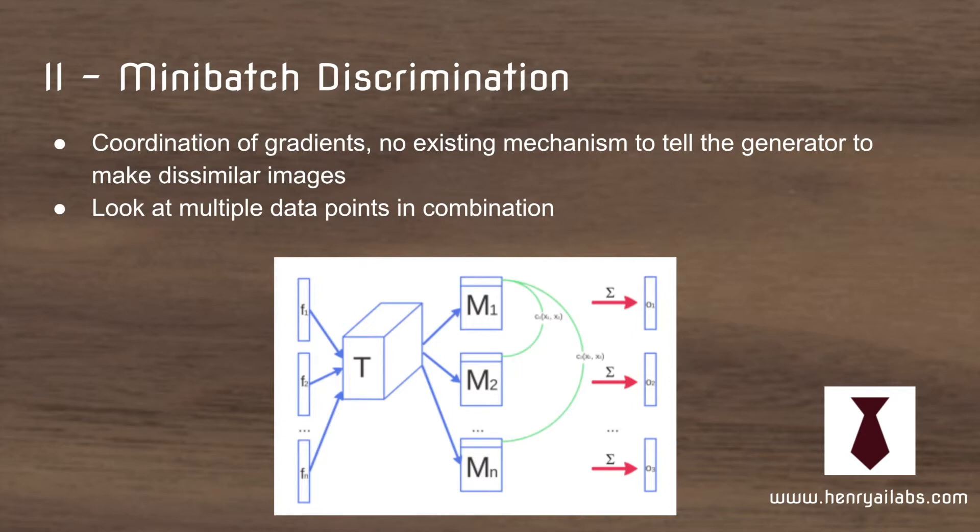To encourage a generator not to do this, you have to have some sense of the batch of images and how this batch of real is different from fake. They use a projection tensor and intermediate matrices to compute the similarity between different generated images to try to push the generator towards more diverse output.